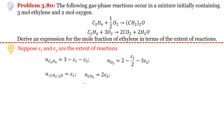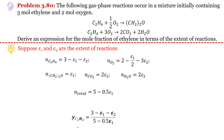Moles of CO2 = 2 epsilon 2, since CO2 only appears in the second reaction with stoichiometric coefficient 2. Moles of H2O = 2 epsilon 2. The total number of moles equals the summation of all these. The mole fraction of ethylene equals moles of ethylene at that time divided by total moles.